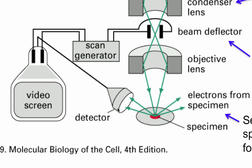Those electrons could then be detected at an angle by the detector, and then the detector is connected to a video screen to show the image. Since the electron beam is scanning the sample, you are having a constant shower of electrons over the sample. The sample then generates secondary electrons that are going to be scattered to the side, and those could then be detected by the detector. That is how scanning electron microscopy works.